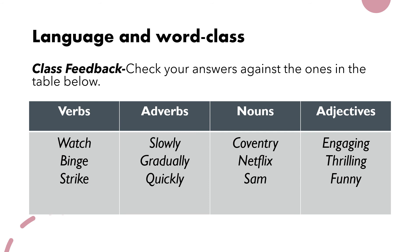To recap: verbs are action words — doing words. Adverbs generally end in 'y', as seen with slowly, gradually, and quickly, though that isn't the case for every word. A simple rule to remember is that adverbs add to the verb and tell us how something is done. Nouns can be trickier, as there are several different types — essentially the name of a person, place, or thing. Adjectives help to describe a noun. All of these are extremely important and will be things you're expected to comment on at both functional skills and GCSE level.